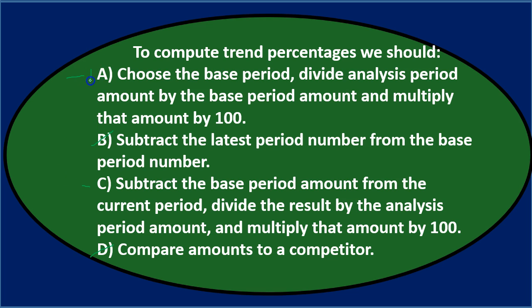Of those two it's actually going to be A, because with trend analysis we're not doing a subtraction problem — we're comparing everything back to that base period. To do that we choose the base period (it's arbitrary), divide the analysis period by the base period, and multiplying by 100 converts the decimal to a percentage format. Final answer: to compute trend percentages we should A — choose the base period, divide analysis period amount by the base period amount, and multiply that amount by 100.